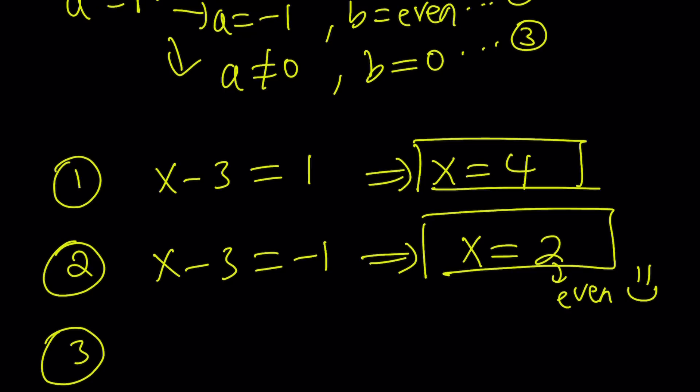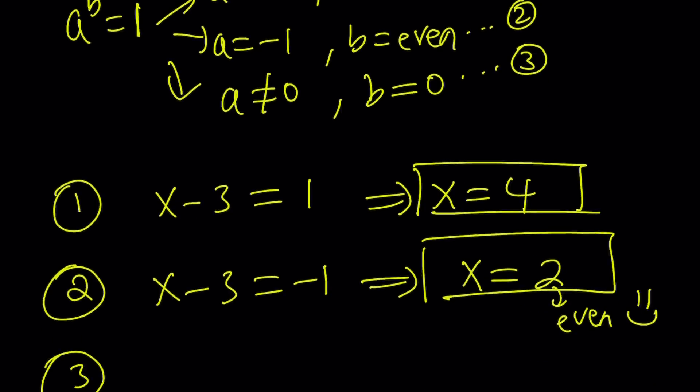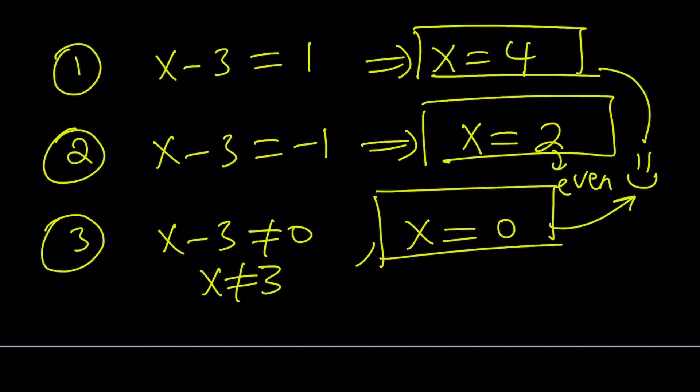Third case. a does not equal 0. So x minus 3 does not equal 0. I start with... Why did I write that first? Because I want to be consistent and always check the base first. Makes sense? And obviously, x will be 0. And if x is not 3, x equals 0 and x does not equal 3 works together. So x equals 0 is also a valid solution. Another happy face. Three happy faces.